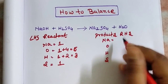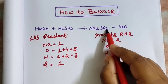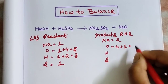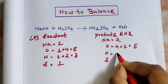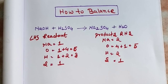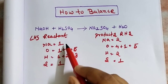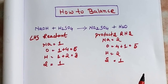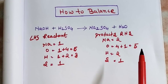For RHS: sodium is two, oxygen is four plus one so total oxygen is five, hydrogen is two, and sulfur is one. Looking at this, sodium is not balanced, oxygen is balanced, hydrogen is not balanced, and sulfur is balanced.